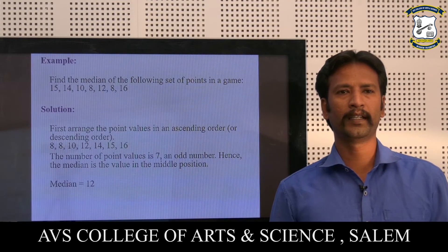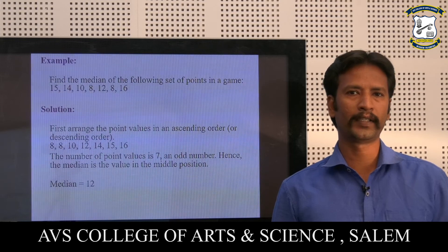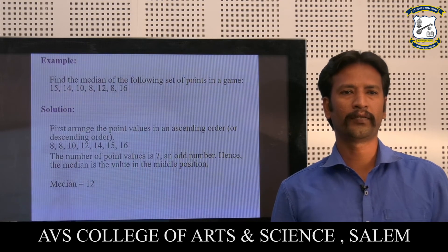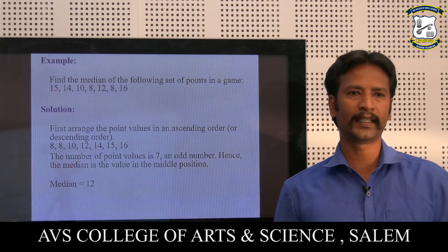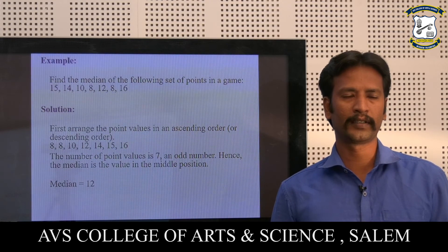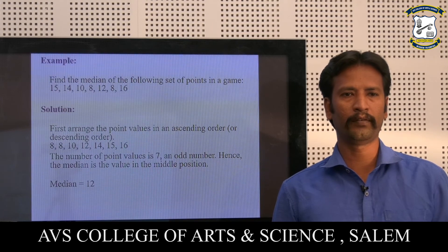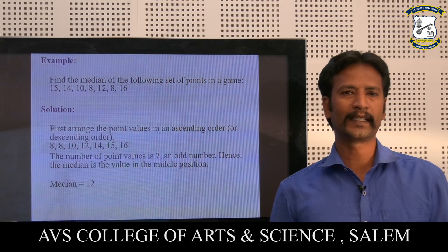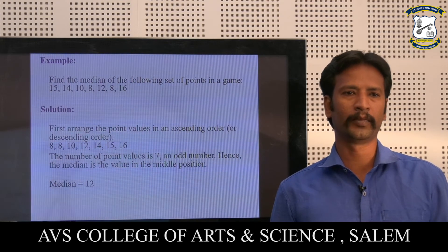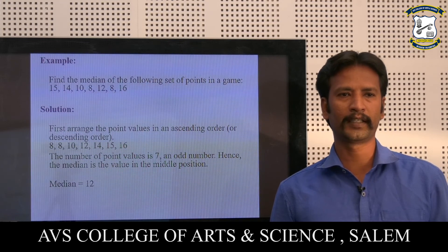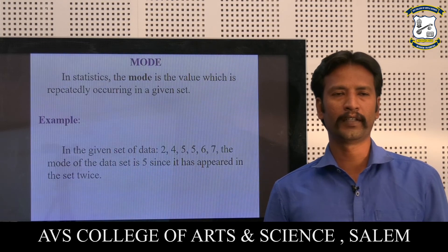Example: find the median of the following set of points in a game: 15, 14, 10, 8, 12, 8, and 16. First, we arrange the given points in ascending order: 8, 8, 10, 12, 14, 15, 16. The number of points is 7, which is an odd number. Hence, the median is the value in the middle position, which is 12. Therefore, median = 12.